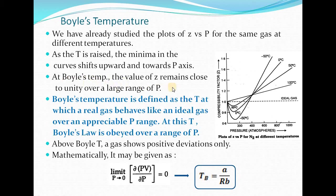At Boyle's temperature, the value of Z remains close to 1. For example, for nitrogen the value of Z remains close to 1 at 50 degrees Celsius over a large range of pressure. Such a temperature at which a real gas behaves like an ideal gas, or obeys Boyle's law over an appreciable pressure range, is known as Boyle's temperature.